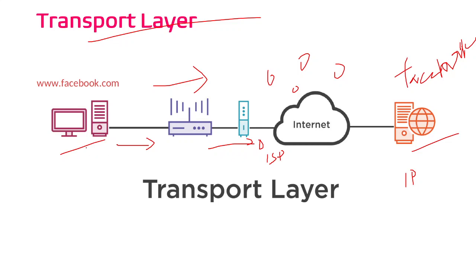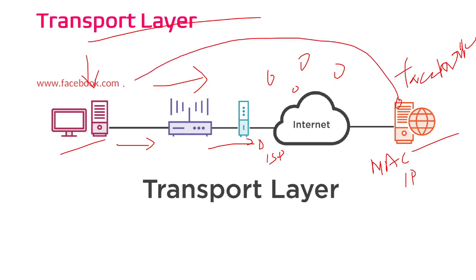To communicate with a nearer device — the adjacent node — I need a MAC address. And finally, I want to open a particular process in the Facebook server so that I can access a particular page in my system. To retrieve data, I have to open a process in my system also. This is called process-to-process communication in the transport layer, and the transport layer is responsible for this process-to-process communication.